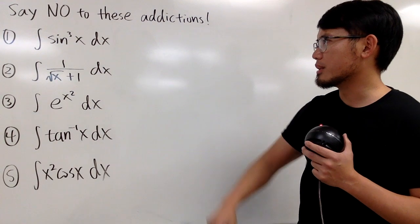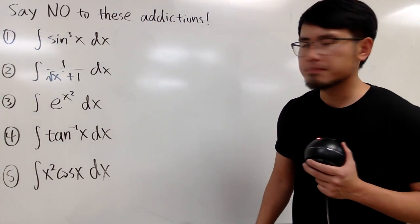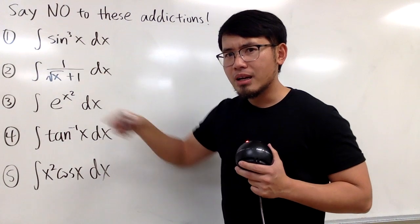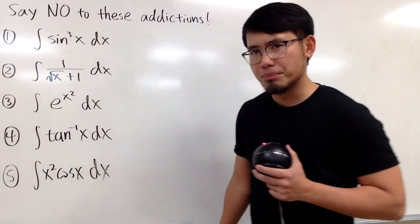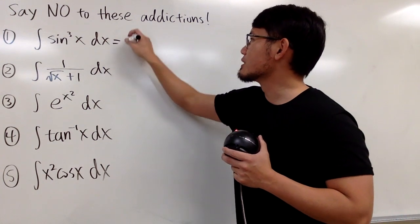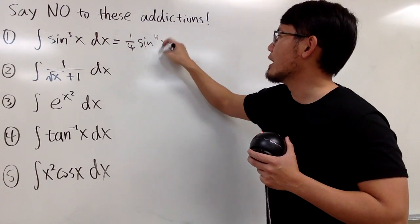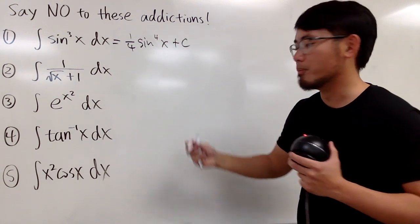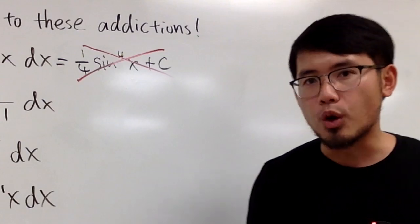Let's take the first one. I call this the power rule addiction. When some people see a power right here, they will just use the power rule. They add one — 3 plus 1 is 4 — and then they divide by 4. So they will just say this is one-fourth sine to the fourth power of x. And yes, they remember to put on the plus C, but no, this right here is not the correct answer.